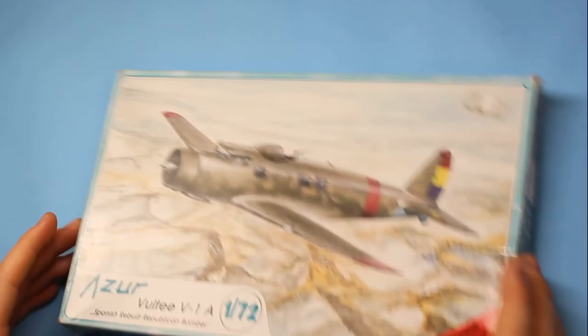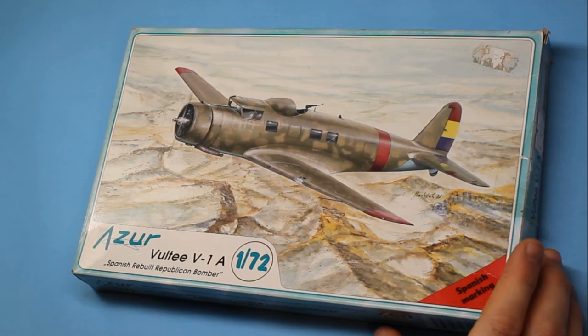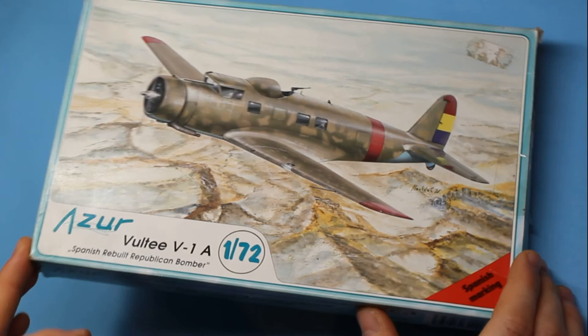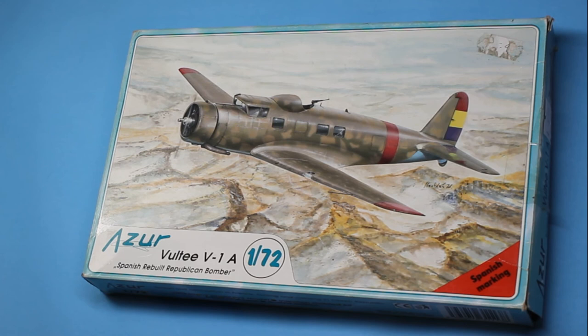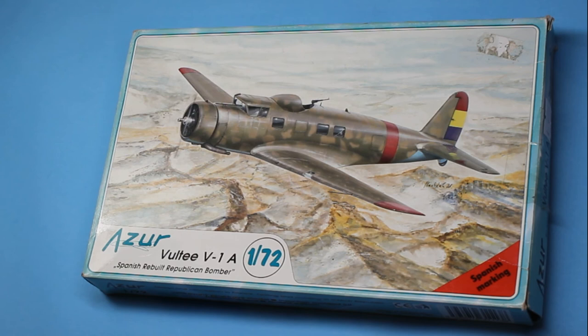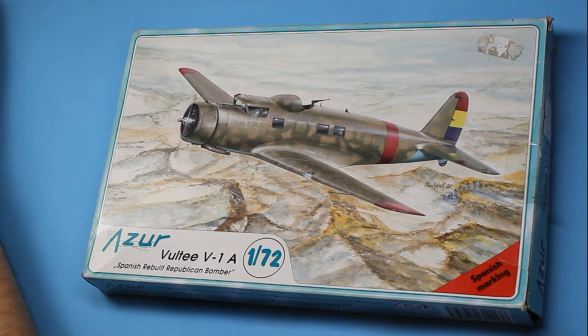So that is the Azure Volte V1A Spanish Rebuilt Republican Bomber, 1/72nd scale. This is Azure Boxing number A038. Quite an unusual kit. Don't expect to be picking one of these up anywhere other than sort of model shows or possibly on eBay. But bear in mind I've just seen one go today which sold for £35. So it does seem to be a reasonably rare kit these days. I picked this up at Telford 2017 for £6. So that's obviously quite a bargain.